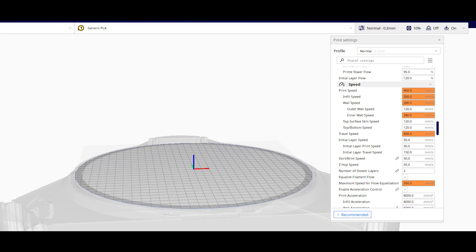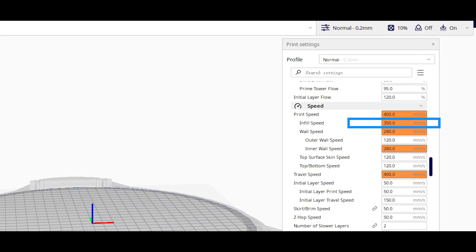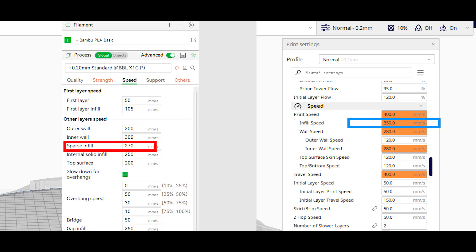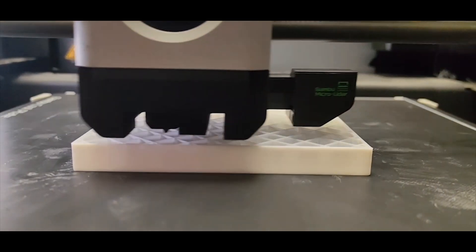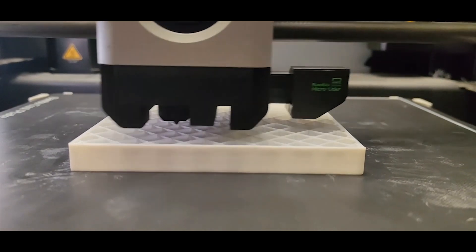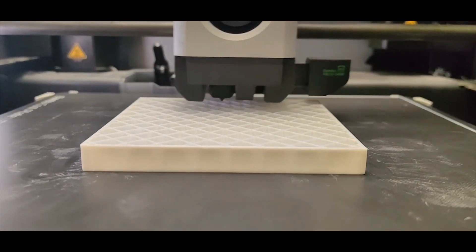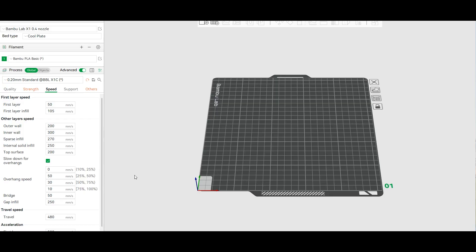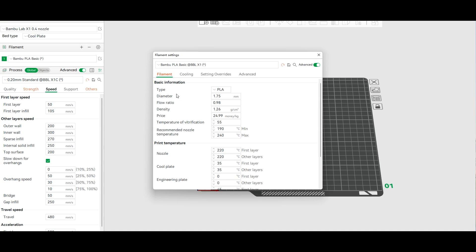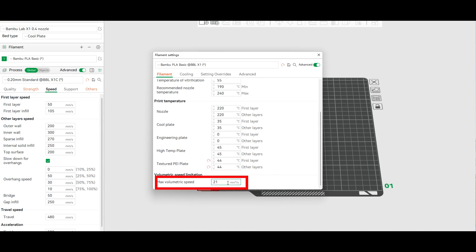The V400 at 0.2 millimeter layer height has a filling speed of 350 millimeters per second, much larger than the X1's 270 millimeters per second. So the X1's print speed will be limited by the nozzle flow. In order to ensure print quality, they have to set the maximum volume speed as 21 millimeters to the third power per second.